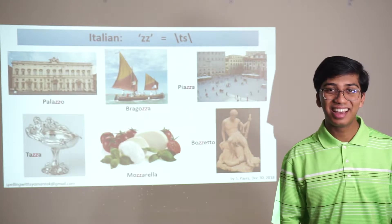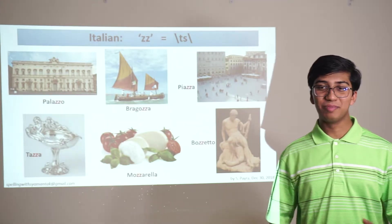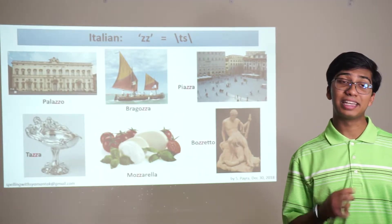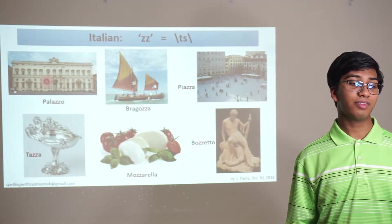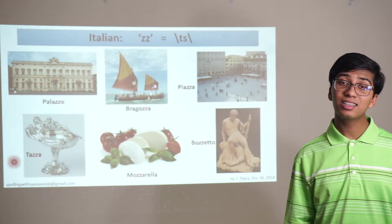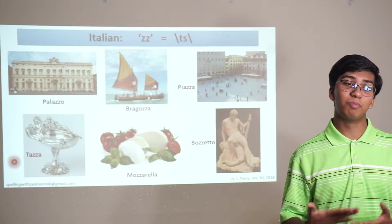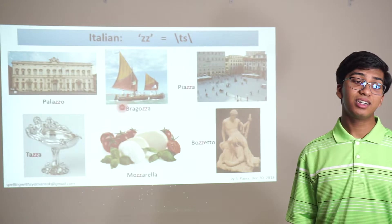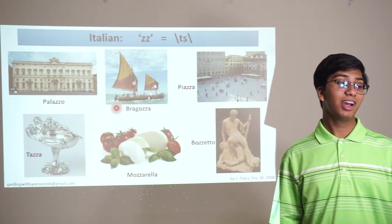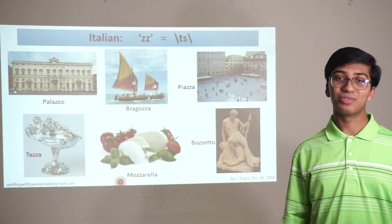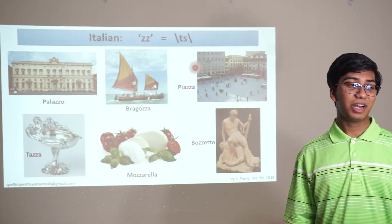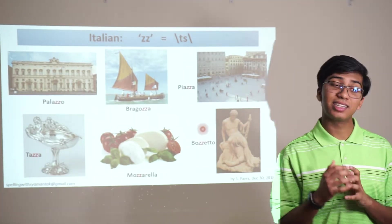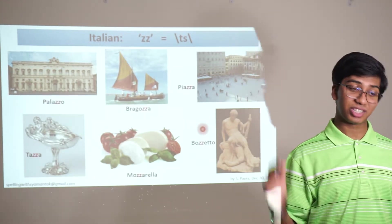The same letter combination you have in the middle of pizza is present in a lot of Italian. The TS sound is going to be written as ZZ. You have palazzo, tazza — an ornamental receptacle with a large flat shallow bowl on a pedestal often having handles — a bragozza, a two-masted trawler common near Venice, mozzarella — a kind of cheese most of you already know — and piazza, an open square.